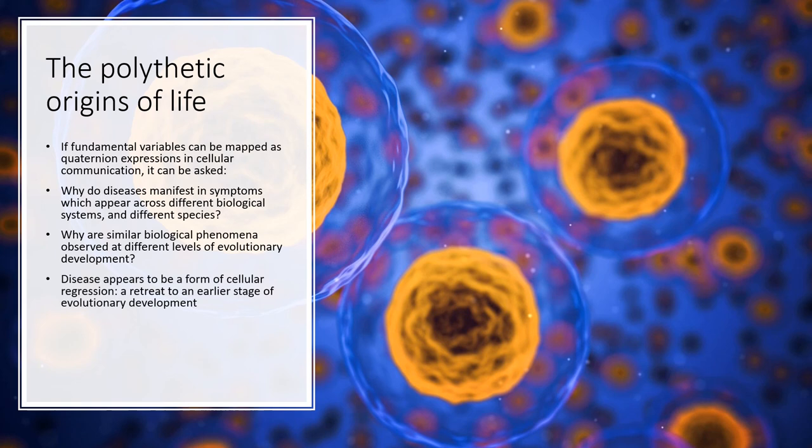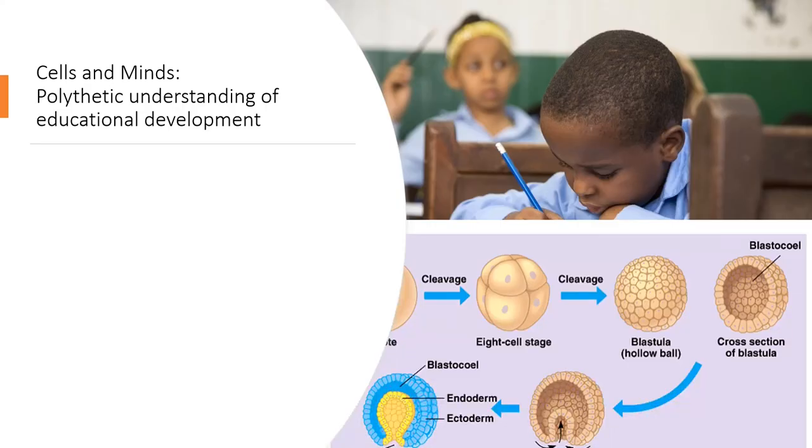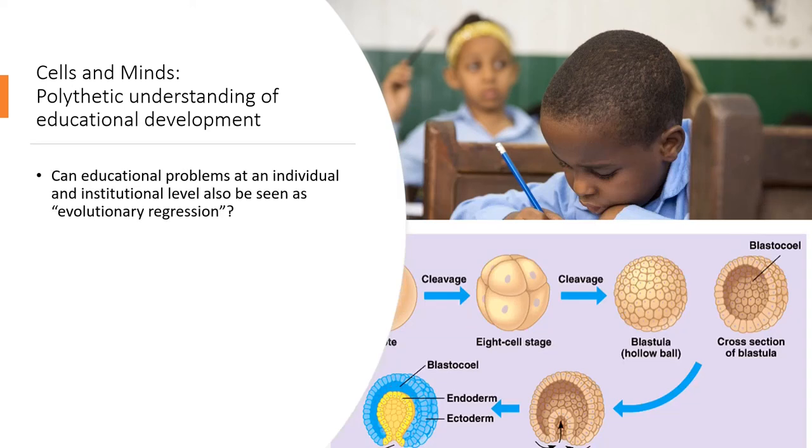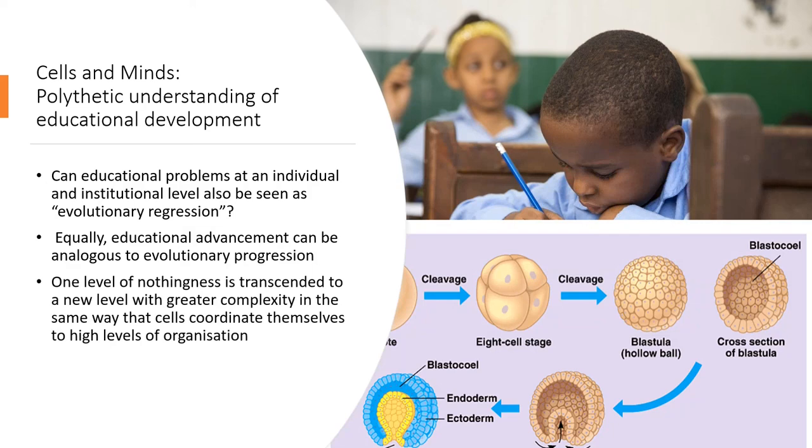The most interesting aspect of this with respect to education is that disease appears to be a form of cellular regression, that the cell regresses to a previous stable state in its evolutionary history, and that the ultimate stable state in evolutionary history is the beginning of time and nothing. This raises the possibility that educational problems, both at an individual and an institutional level, can be similarly characterized by a regressive process. Similarly, educational advancement can be seen as evolutionary progression, as one level of complexity and production of zero gives rise to a new and more sophisticated level of complexity which also produces zero.